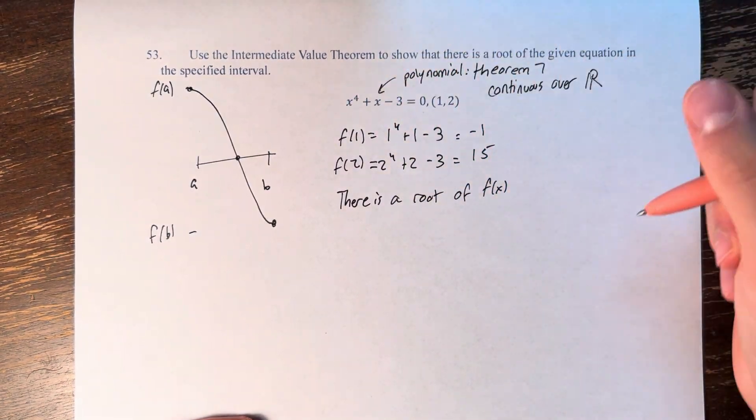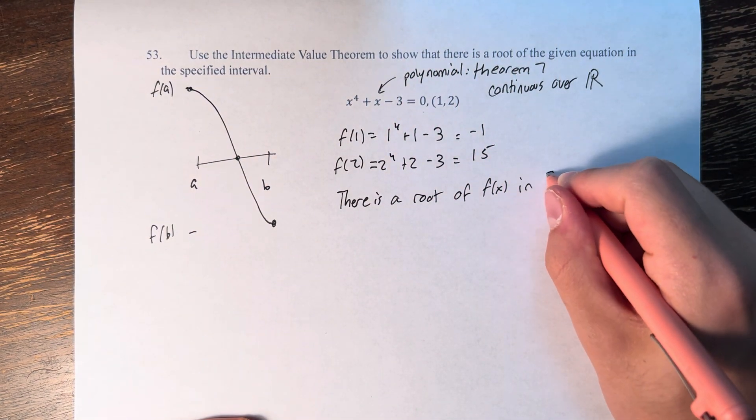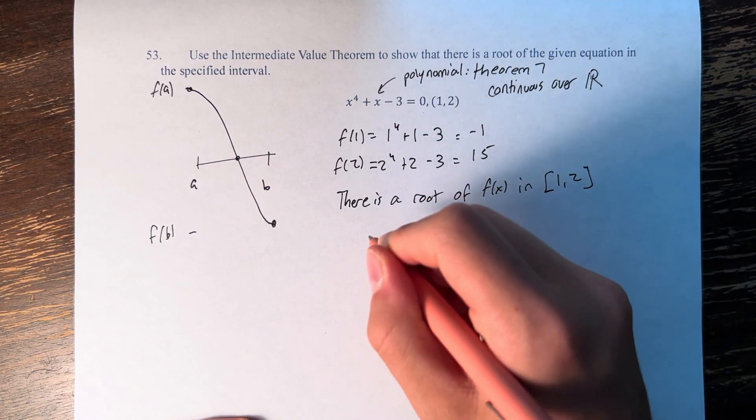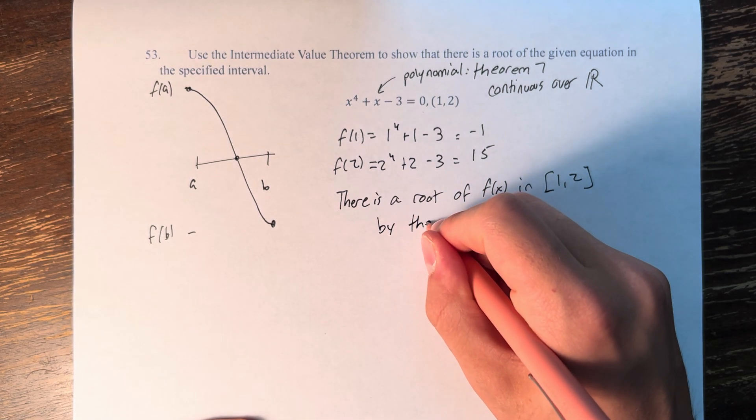we can say that there is a root of f of x, and I'm just calling this function f of x, in the interval from 1 to 2, by the intermediate value theorem.